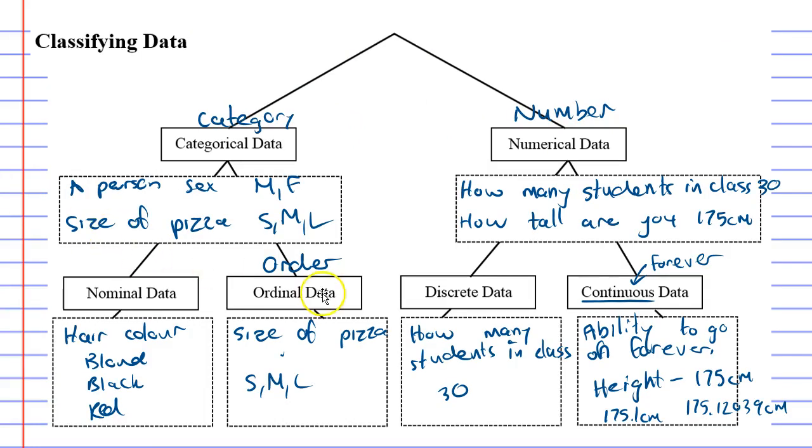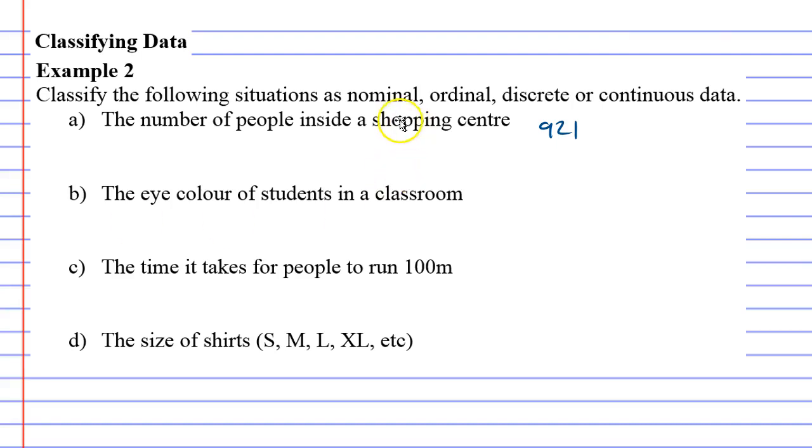And if we look back, discrete data was the one where you had a number of people, but it didn't go on forever. Okay, so this is discrete. Discrete data.